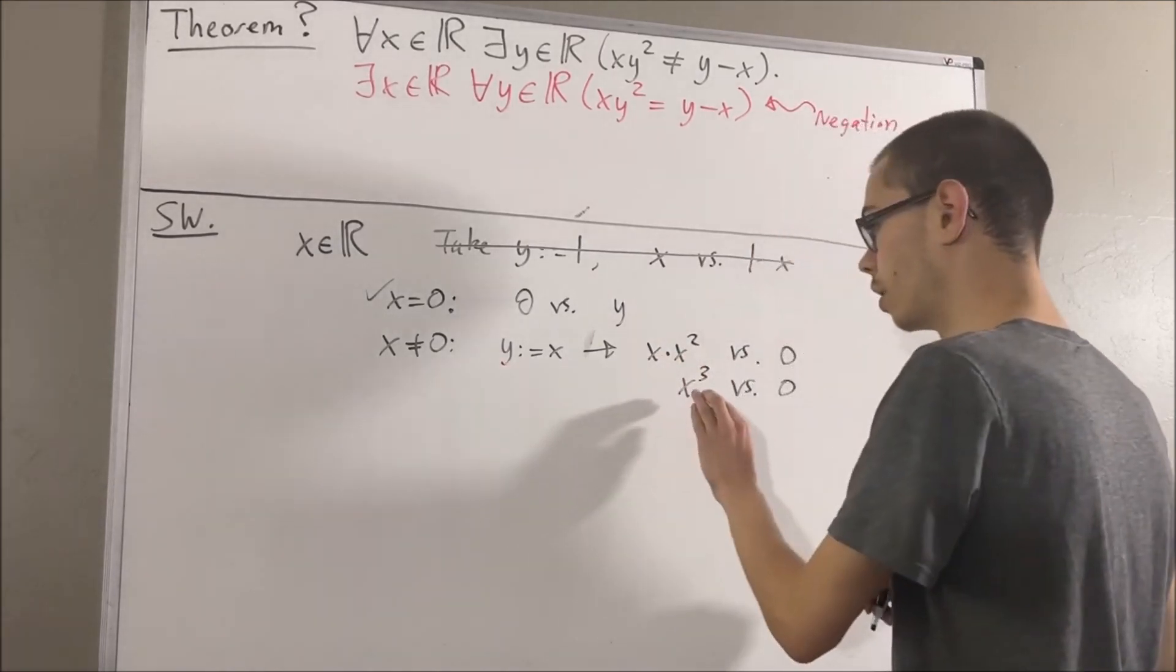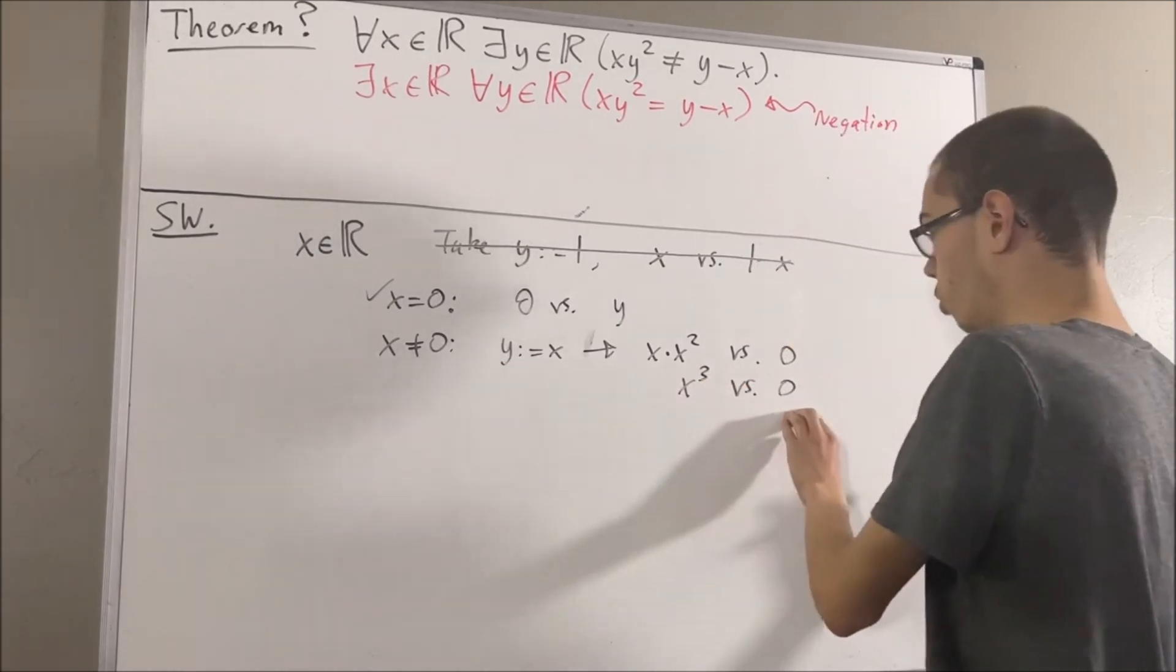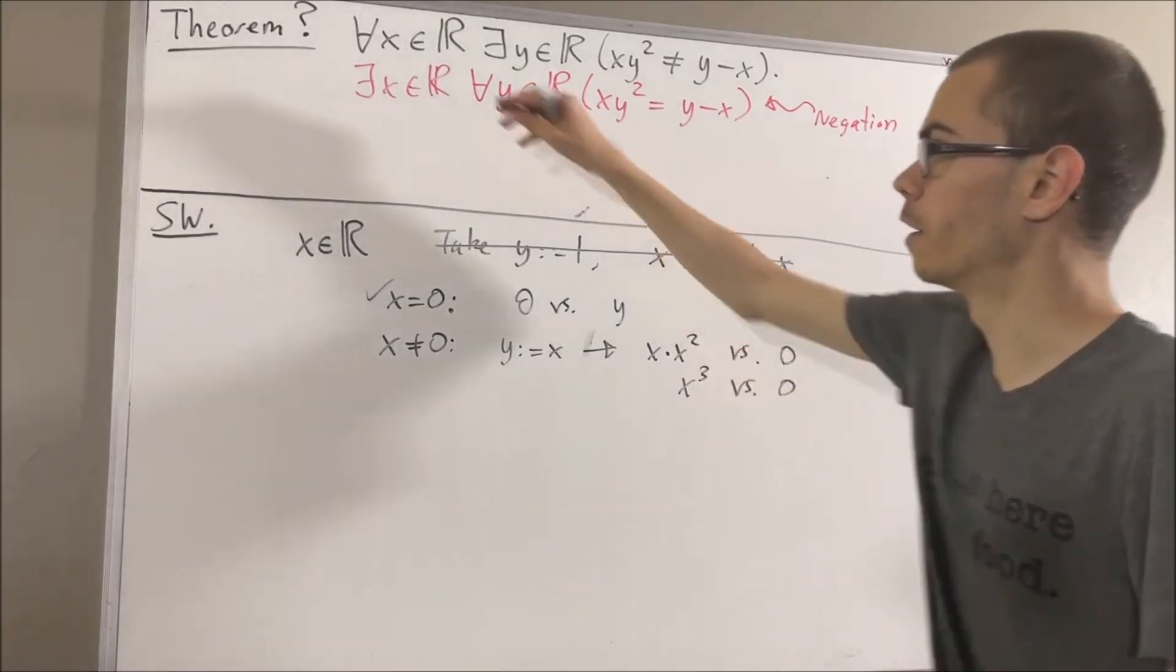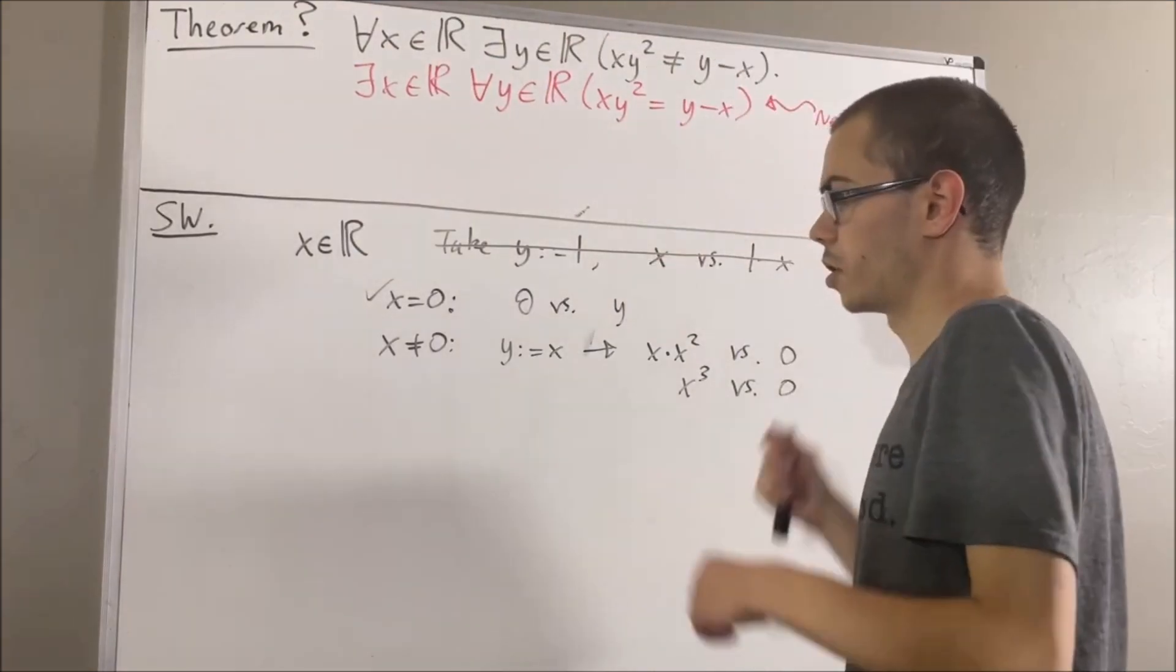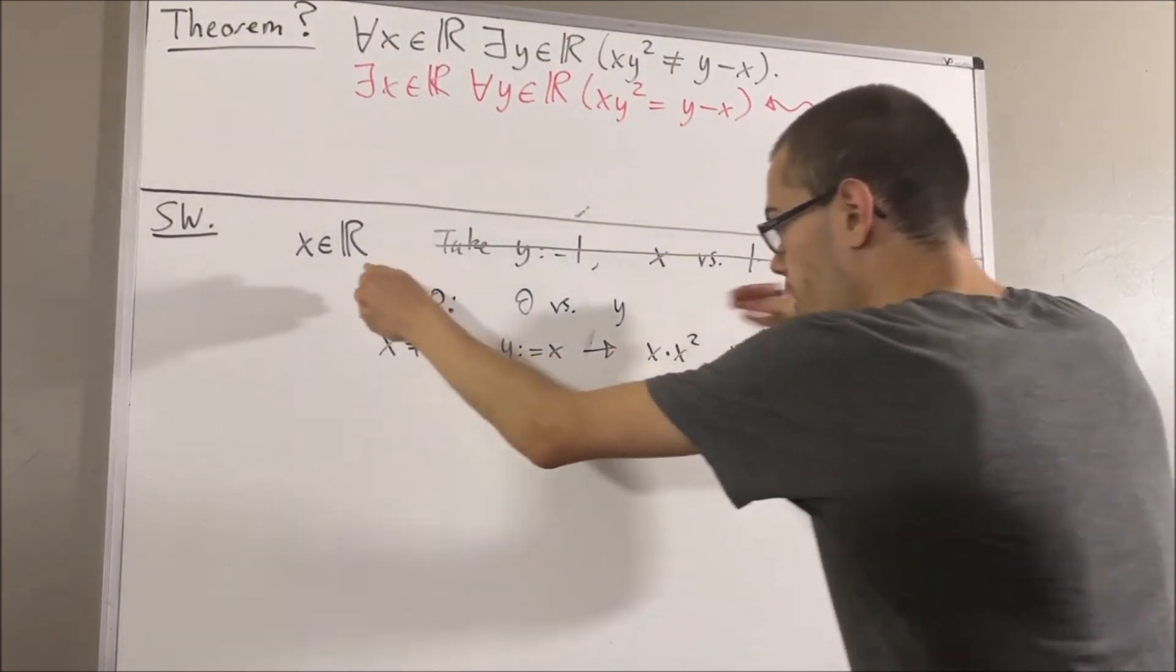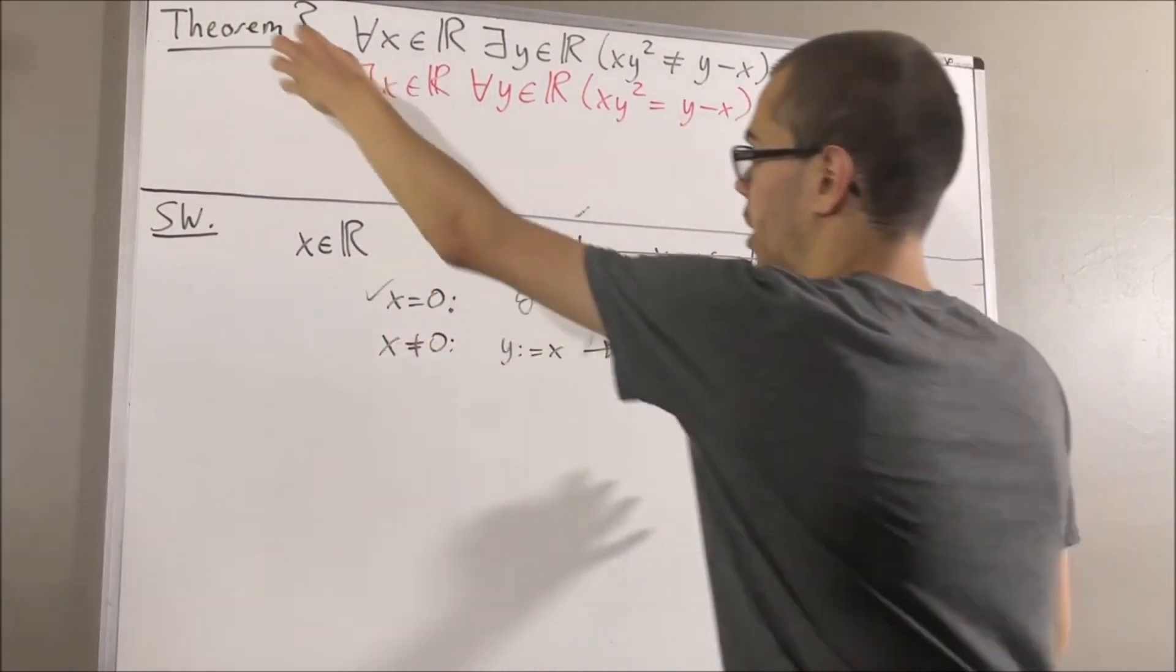Since x is not equal to zero, x cubed surely isn't equal to zero. So I think we have a proof of this. So with these two cases, let's try to actually prove the theorem now.